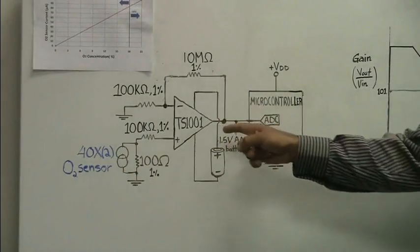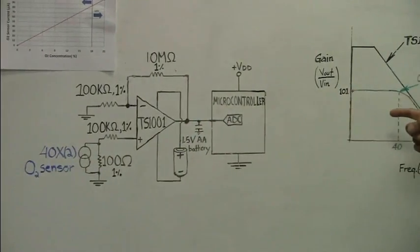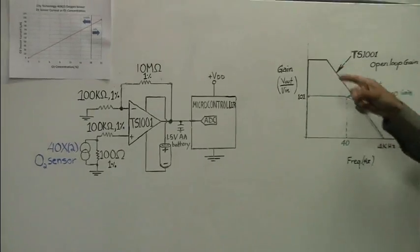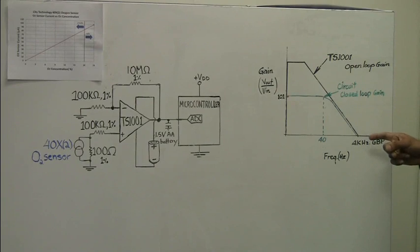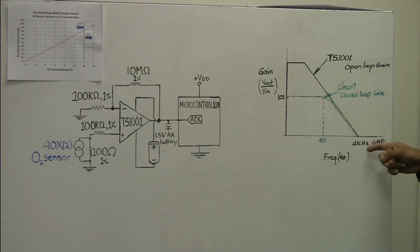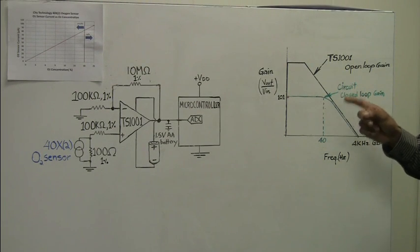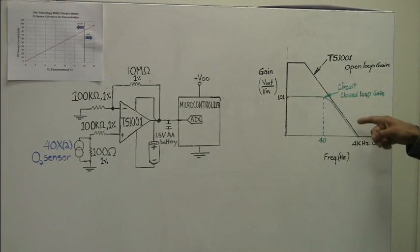The transfer curve for the TS-1001 is as shown here. As you can see, the open-loop gain curve shows that the gain bandwidth product of the TS-1001 is 4 kilohertz. The bandwidth of the circuit is at 40 hertz, and that is shown here by the circuit closed-loop gain curve.